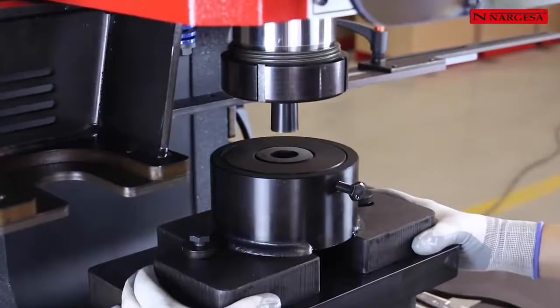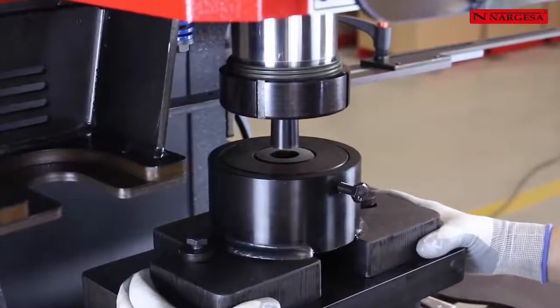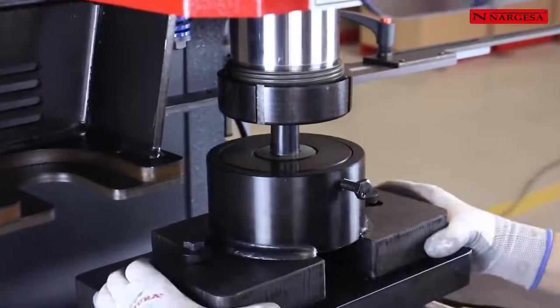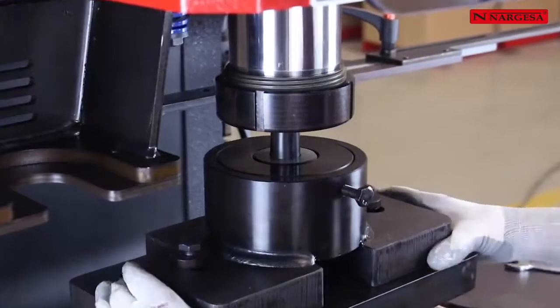To center the punch, we get the piston down in the manual performance mode, and we lift the die holder until the punch is inserted into it.